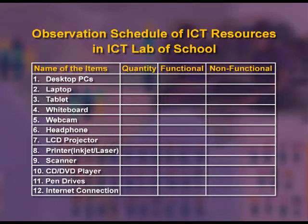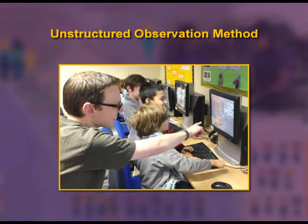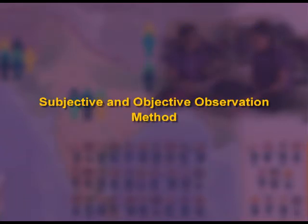In unstructured observation, the observer has the freedom to note down whatever he or she feels is correct and relevant to the study. For example, in an ICT lab the observer is watching and noting down without having any pre-decided points.